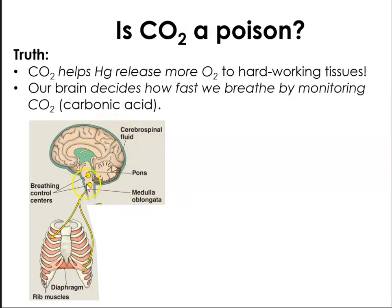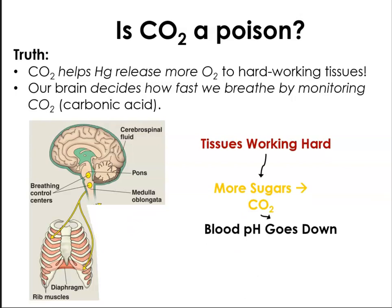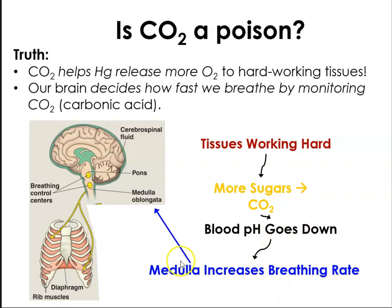We have monitoring centers in our brain known as breathing control centers, which not only monitor carbon dioxide in our blood but also give signals to our respiratory muscles to breathe harder to release carbon dioxide and breathe in more oxygen. The harder our tissues are working, the more carbon dioxide is produced. This carbonic acid is acidic, so it decreases blood pH. A decrease in blood pH stimulates the medulla oblongata — where our respiratory center is — to increase the breathing rate so that we can release more carbon dioxide and breathe in more oxygen to bring blood pH back to normal.